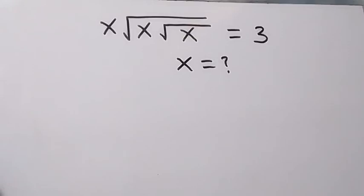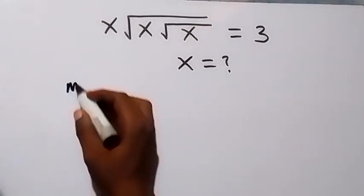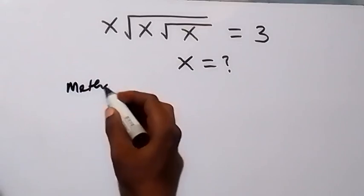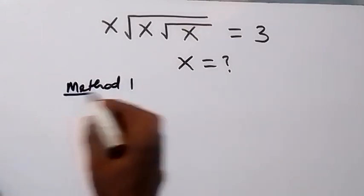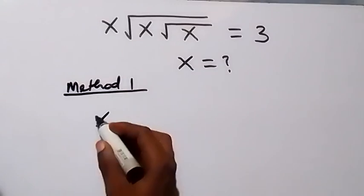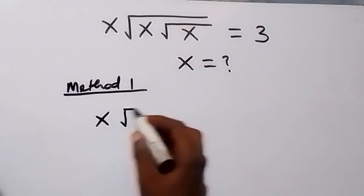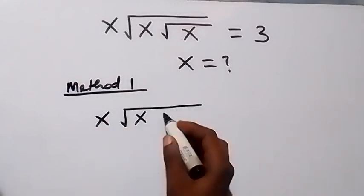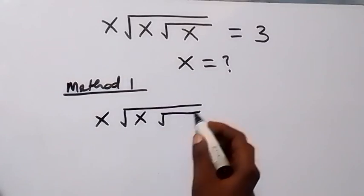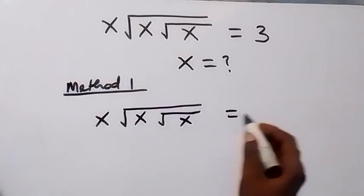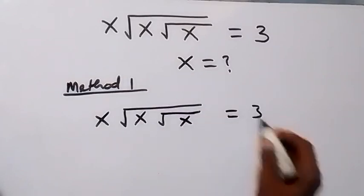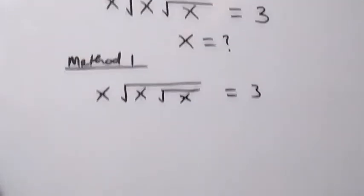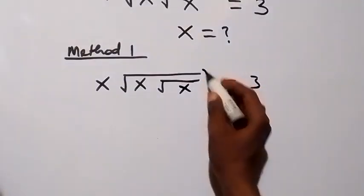Hello and welcome. How to solve this nice math problem involving nested square roots to find the value of x. Let's use two methods. For the first method, we have what is given: x times root x times root x equals 3. From here, let's square both sides.